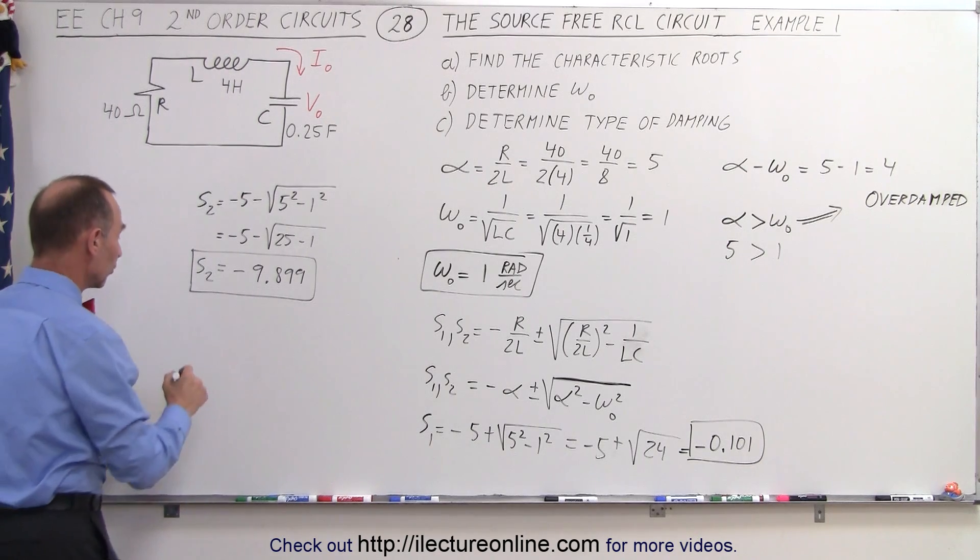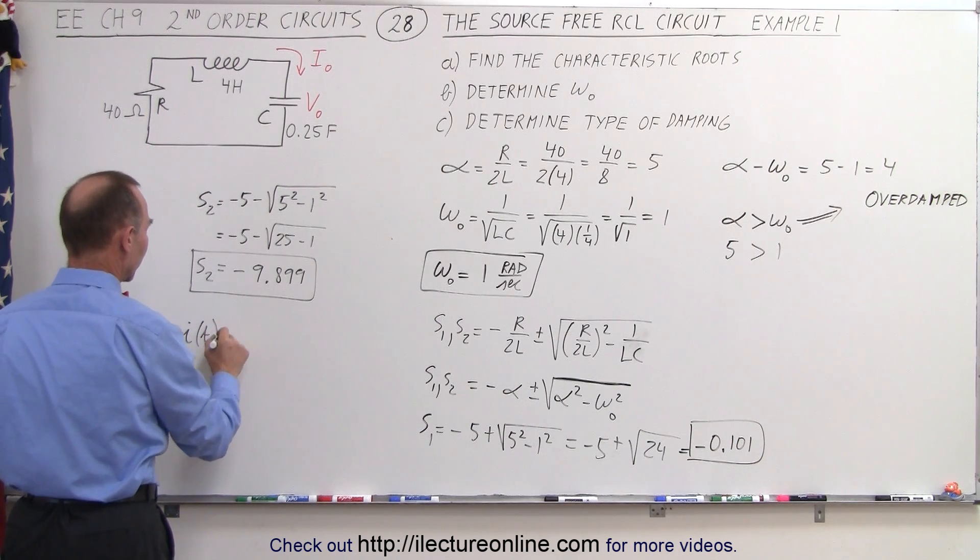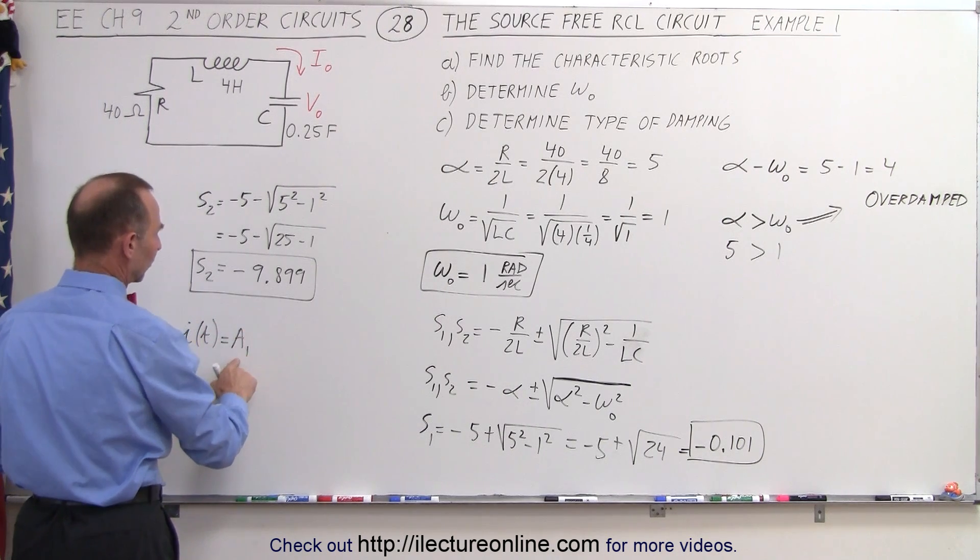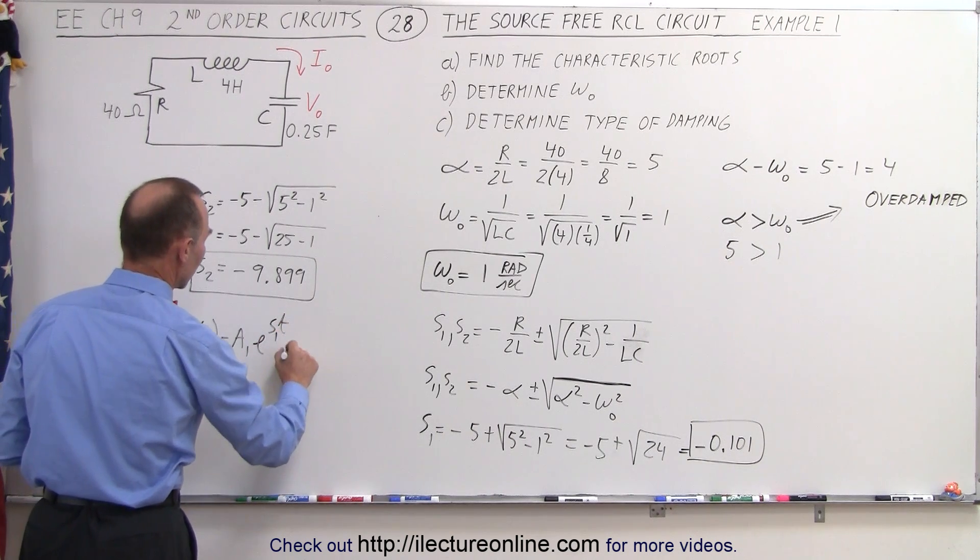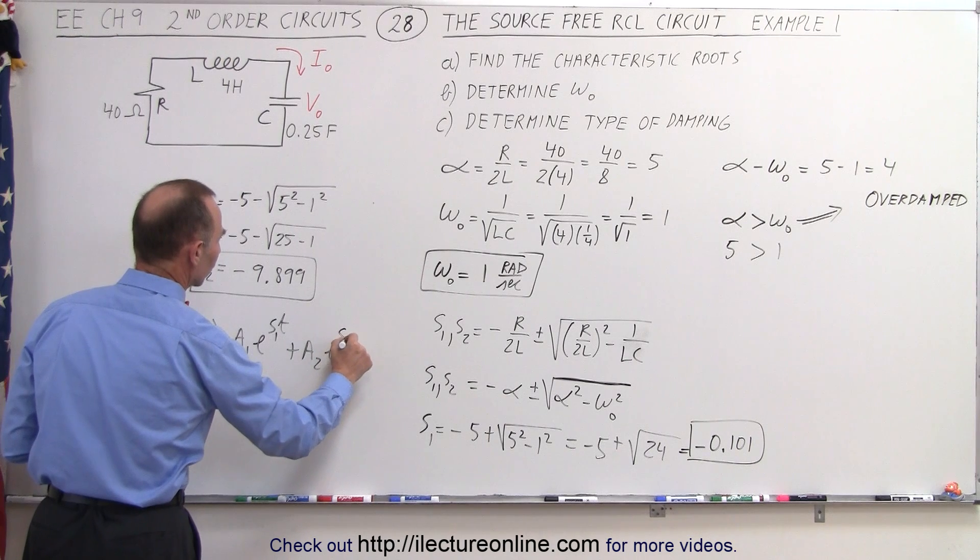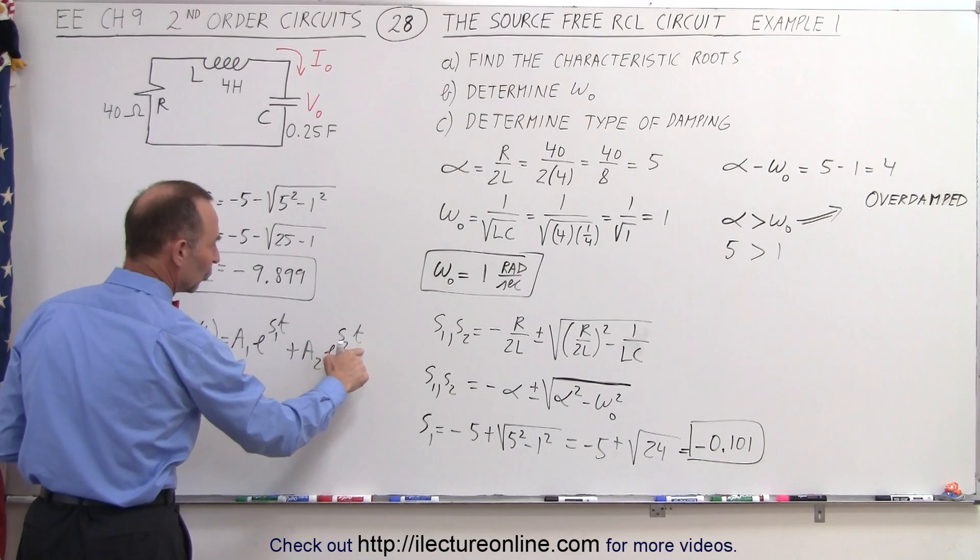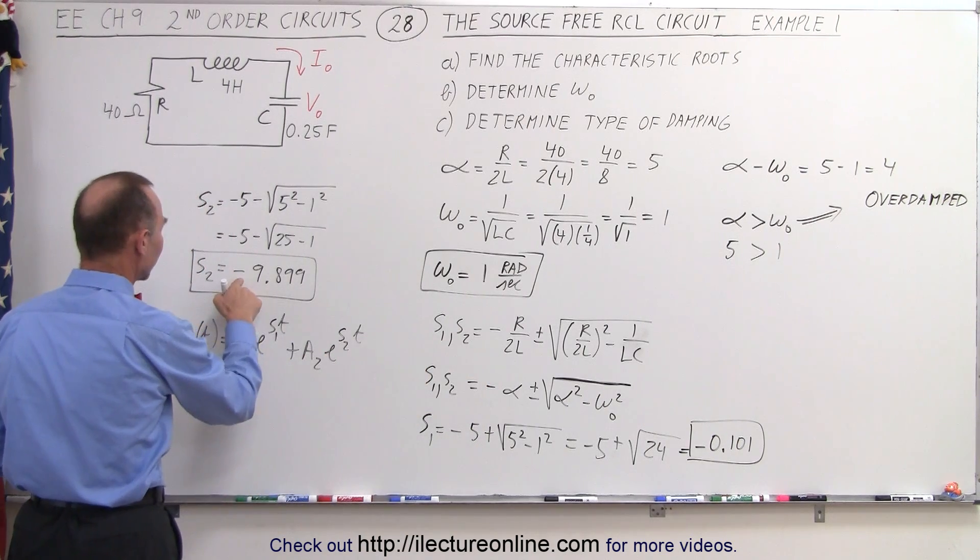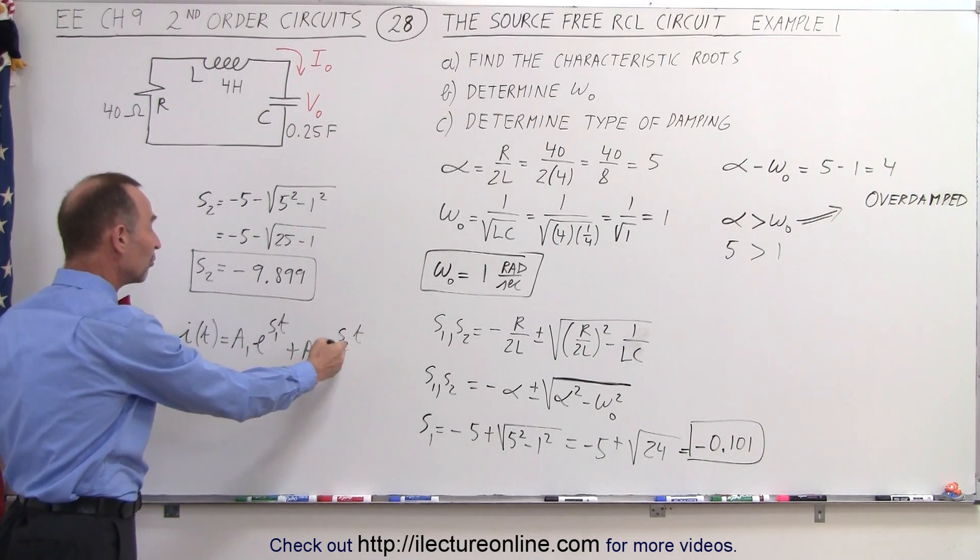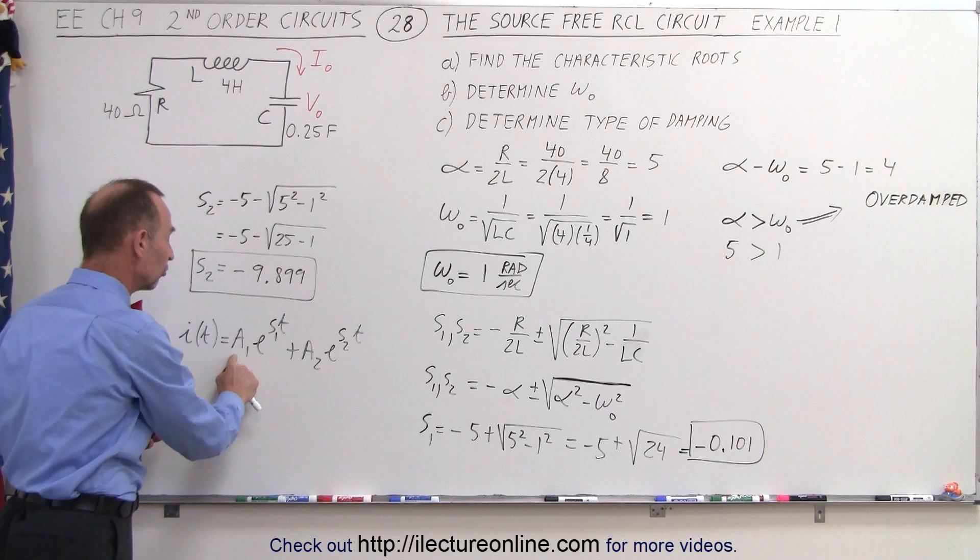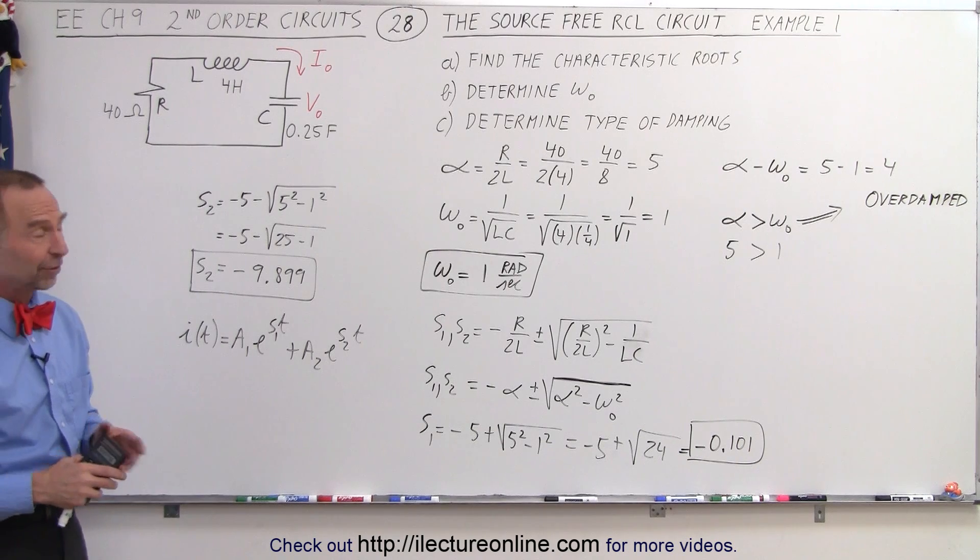Turns out that if we want to solve the equation we get the current as a function of time which is equal to A1 times e to the S1T plus A2 e to the S2T. So what we've done here is we found the two characteristic roots S1 and S2 being minus 0.101 and minus 9.899. Then all we had left to do to find the full equation for the current would be to use the initial conditions to find the two constants A1 and A2. But in this case they didn't ask us to solve it.